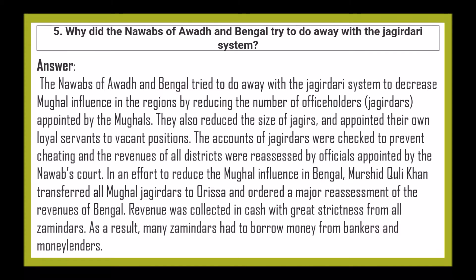Why did the Nawabs of Awadh and Bengal try to do away with the jagirdari system? The Nawabs tried to decrease Mughal influence in the regions by reducing the number of office holders appointed by the Mughals. They reduced the size of jagirs and appointed their own royal servants to vacant positions. Jagirdars' accounts were checked to prevent cheating, and revenues of all districts were reassessed. Murshid Quli Khan transferred all Mughal jagirdars to Orissa and ordered a major reassessment of Bengal's revenue. Revenue was collected in cash with great strictness from all zamindars, causing many to borrow money from bankers and moneylenders.